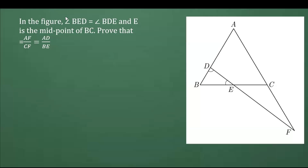In this question from the chapter Similar Triangles, a figure is given. The angle BED is equal to angle BDE. Further, E is the midpoint of side BC, so this is E, the midpoint of BC.